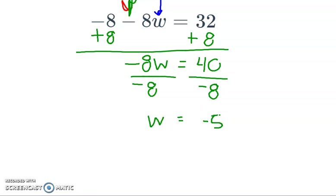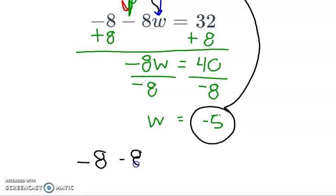The great thing is you could always check your solution by taking it and tossing it back in for the variable. Okay, so I can always recalculate that and say, okay, negative 8 minus 8 times negative 5 and see if I actually get 32. So I'm going to get negative 8. Negative 8 times negative 5 is plus 40. And sure enough, that's 32. Okay, so we've got our answer. Let's do one more.